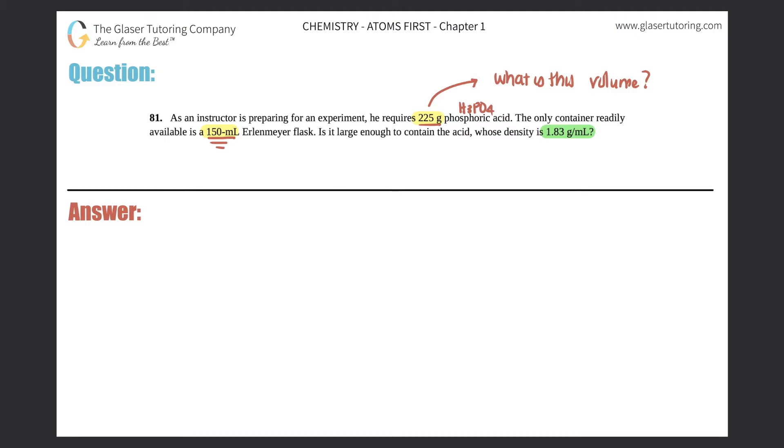We could do that because they gave us the density, 1.83 grams per mil. So this is just a straight density formula: D equals M over V. You guys should know that there's no specific units to use for density. They could come in all different units, whether it's grams per mil, grams per centimeter cubed, or kilograms per liter.